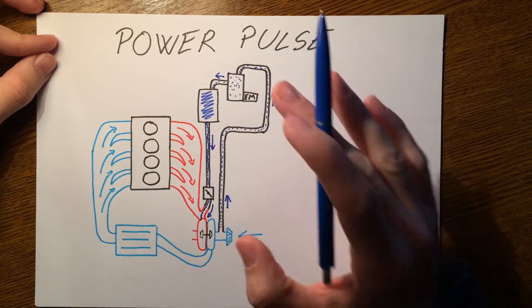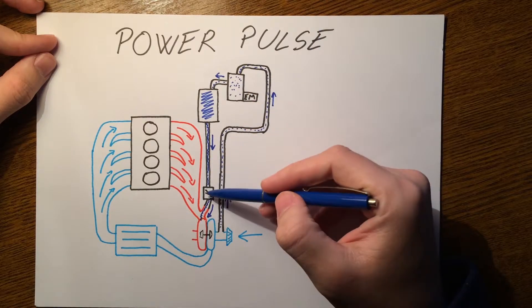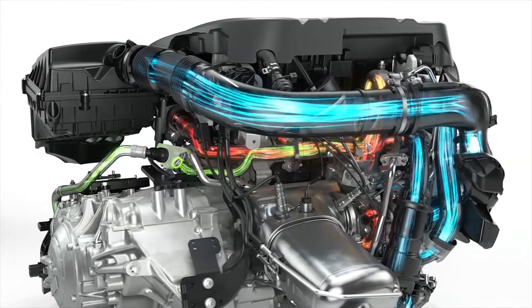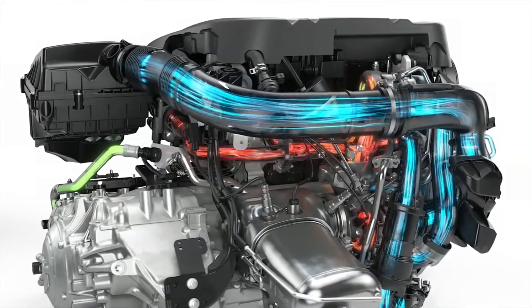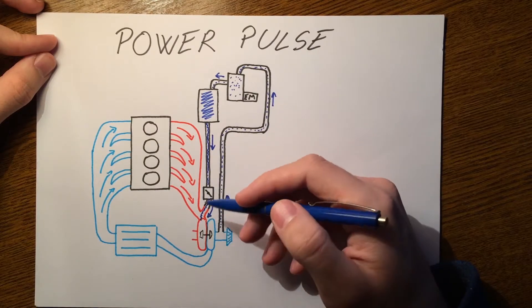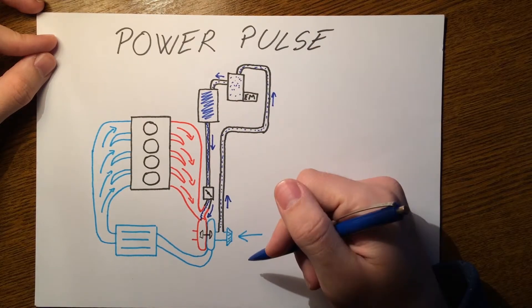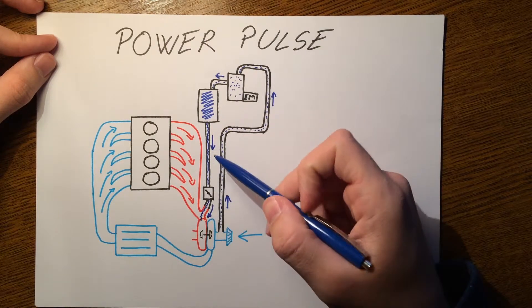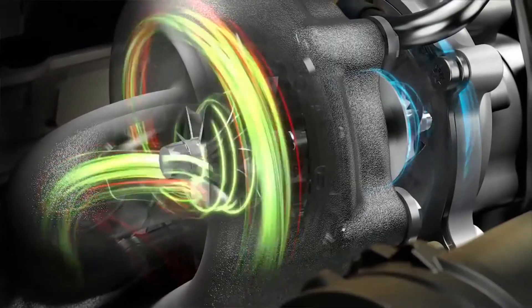When the driver decides to accelerate rapidly, the valve opens and compressed air is released into the exhaust manifold, feeding the turbo. In this way, turbo lag is eliminated. This quick power pulse creates an instant spool up of the turbo.